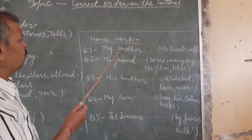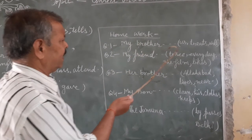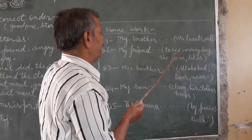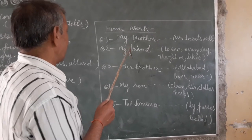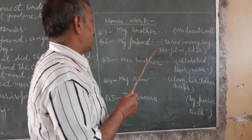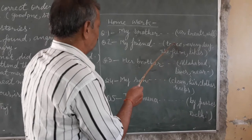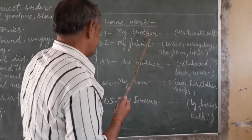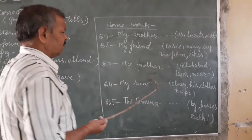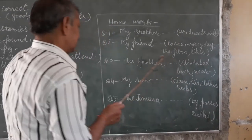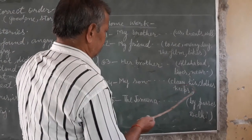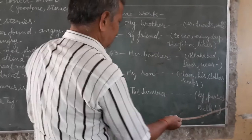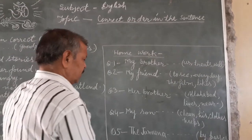For homework, you have to write the following sentences in correct order. First: my brother, in bracket: asked, its word. Second: my friend, in bracket: to see, everyday, the film, lights. You have to write the words after the subject. Third: clean, his cloth, keeps — write in correct order. Fourth: the Jamuna, by passage, daily — you also have to keep this sentence in correct order.